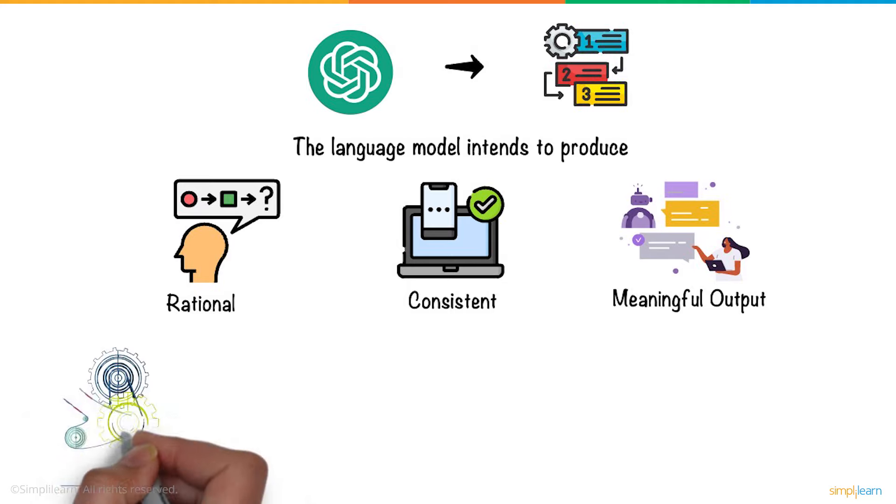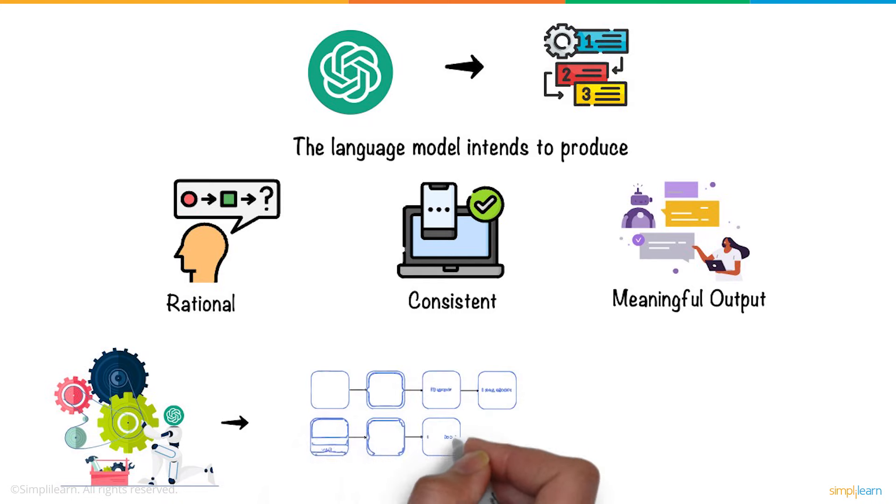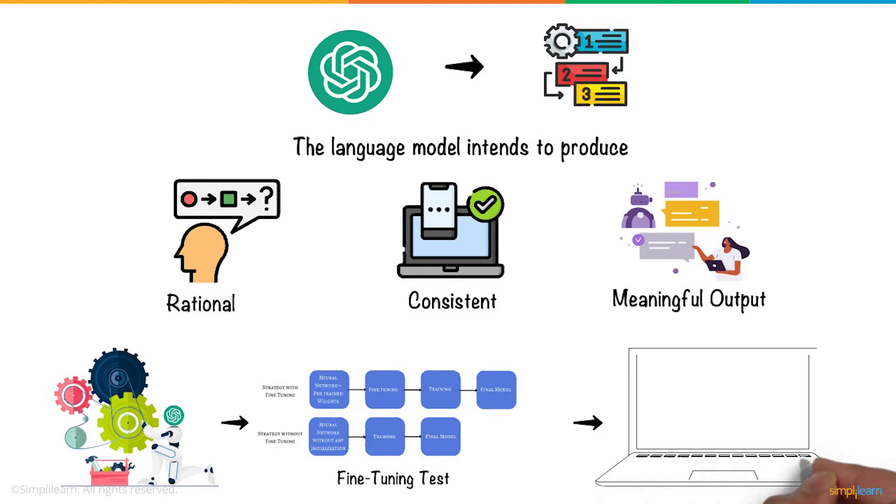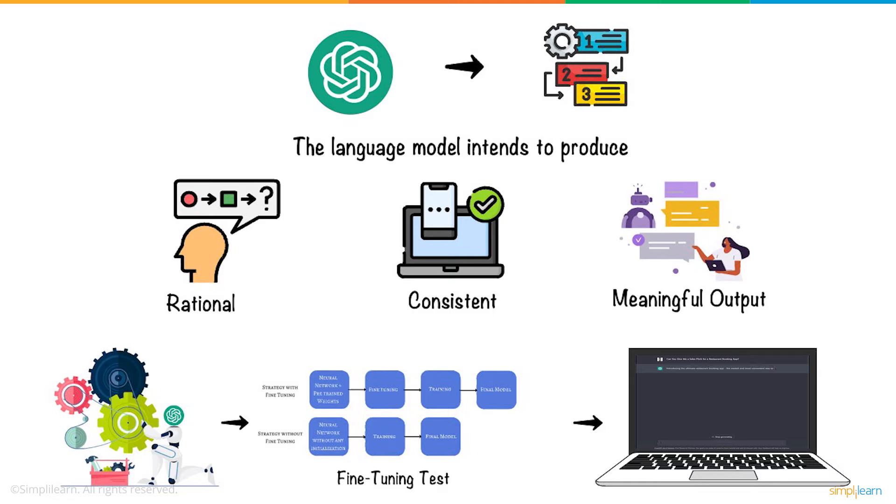The pre-trained ChatGPT can be tuned for a specific task. So ChatGPT passes a fine-tuning test by answering questions, generating text summaries, or generating text in response to a query.